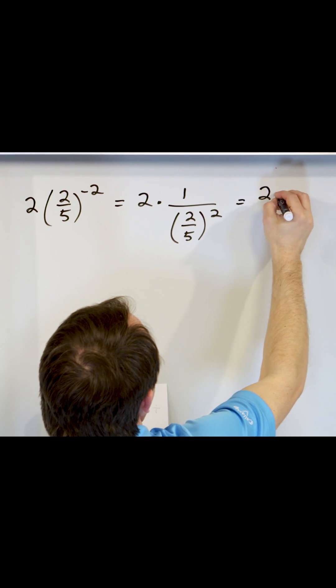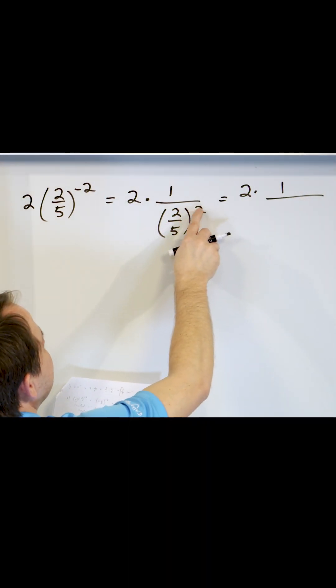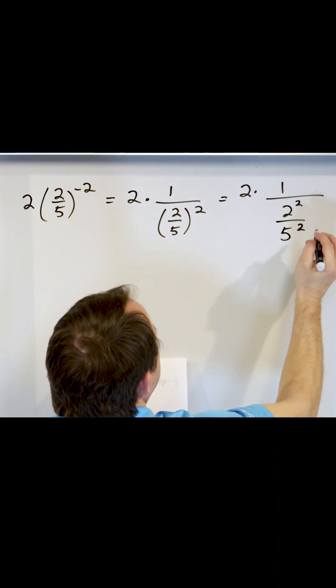Then it's going to be two times one over. This is a fraction raised to an exponent. The numerator is raised to the power of two. The denominator is also raised to the power of two.